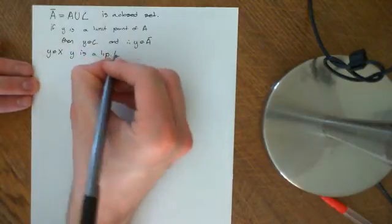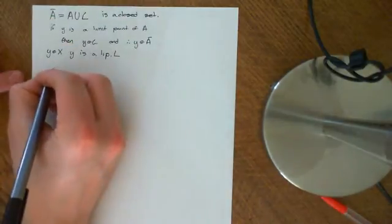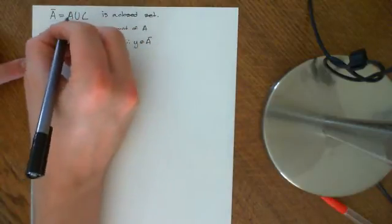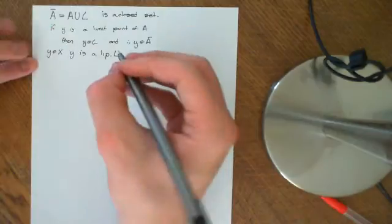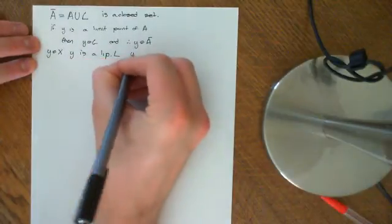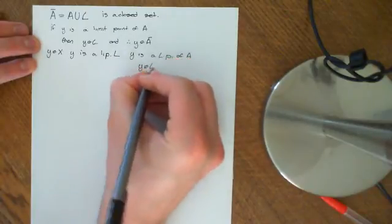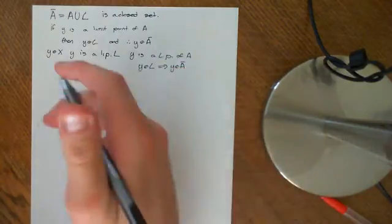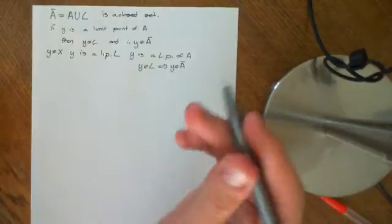We need to make sure that limit points of the set L are also in A closure. To ensure they're in A closure, we need to prove they are either in A or in L — specifically, that they are a limit point for A. Because if they are a limit point for A, they will be in L and therefore in A closure. So what we want to prove is: if Y is a limit point of L, then Y is a limit point of A, and therefore Y is an element of L, which implies Y is an element of A closure. This will prove that A closure is closed.